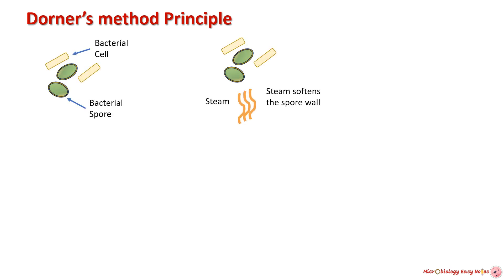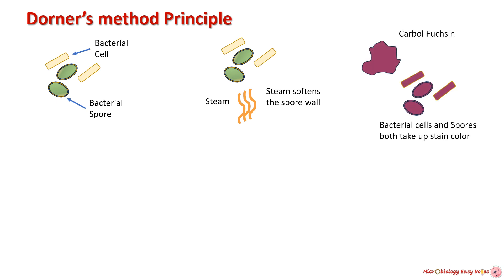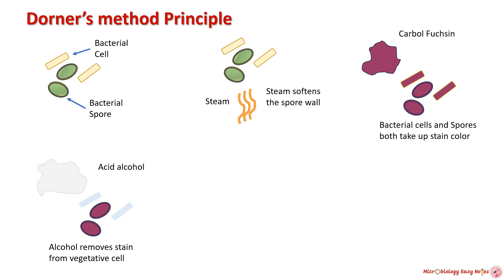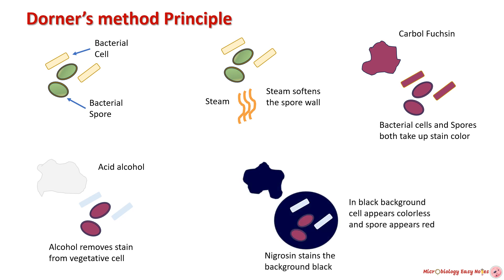Principle of Dorner's method: steam heat is applied which softens the spore wall and carbolfuchsin gets into it and becomes entrapped. When decolorized with acid alcohol, the spore does not release the stain; however, the color washes off from the vegetative cells. Spores appear red and cells appear colorless. When nigrosin counterstain is applied, bacterial cells do not easily take up the counterstain because both the cell and nigrosin are negatively charged. Nigrosin stains the background, so vegetative cells appear colorless and endospores appear red against a black background.